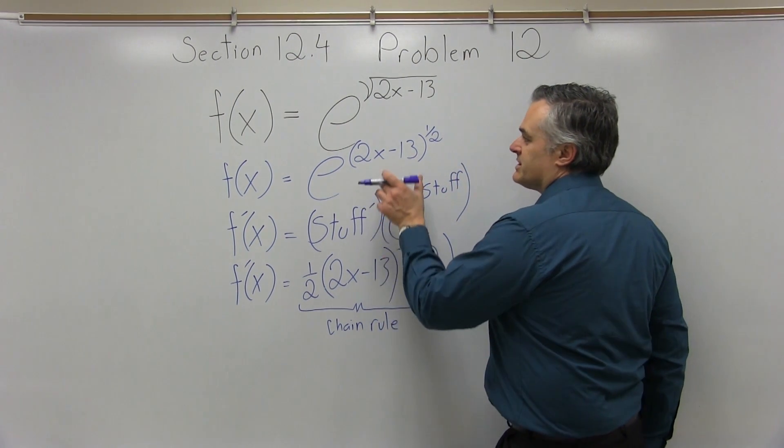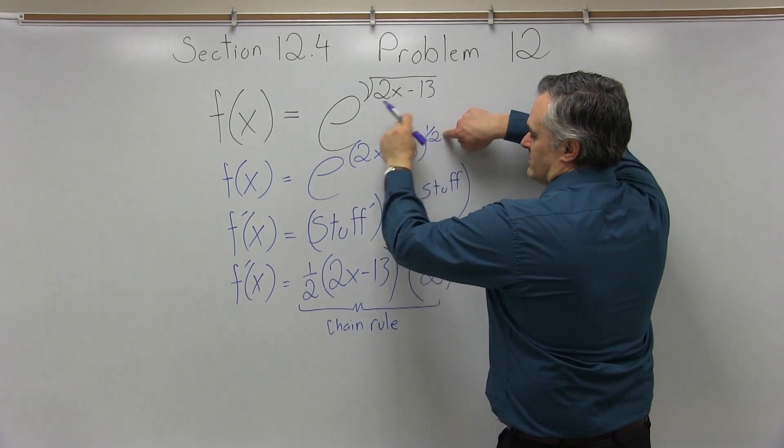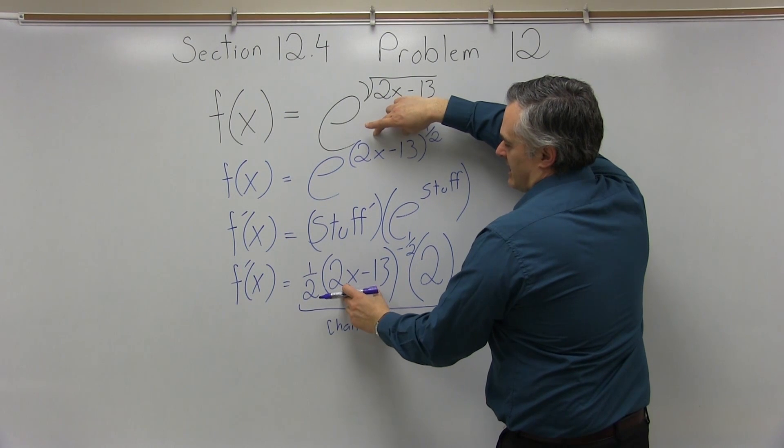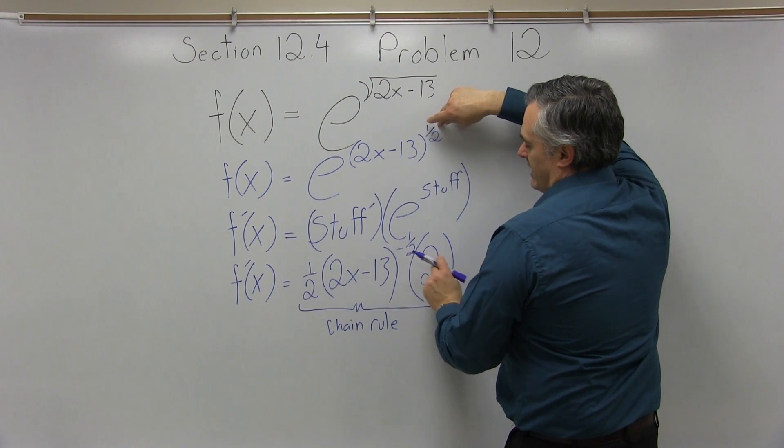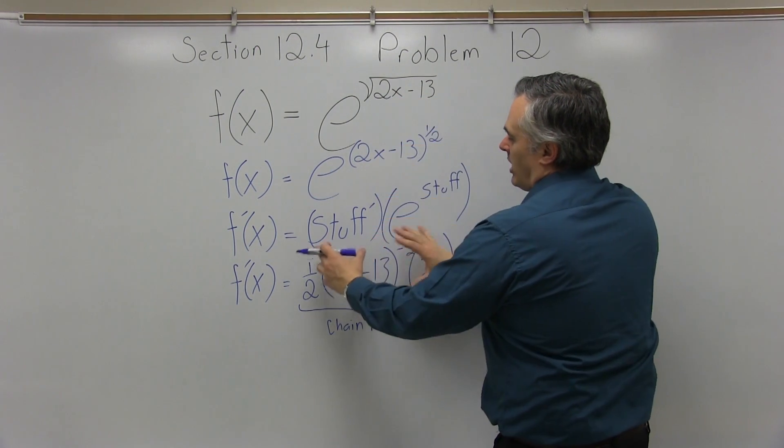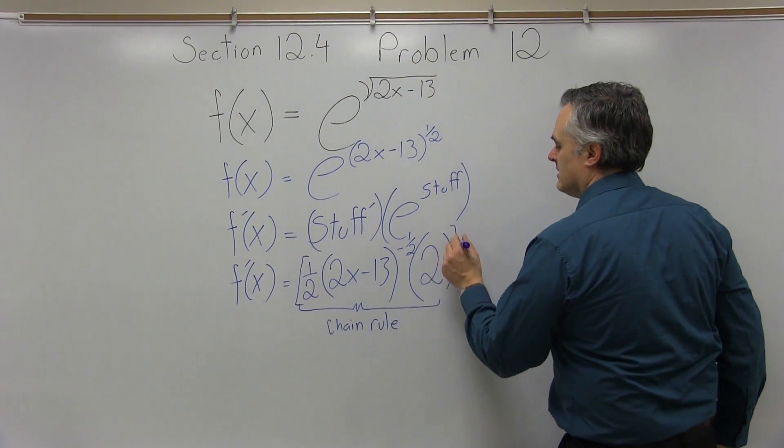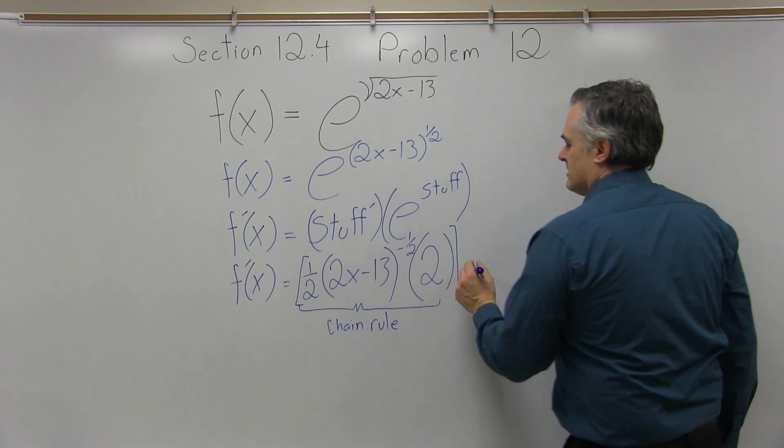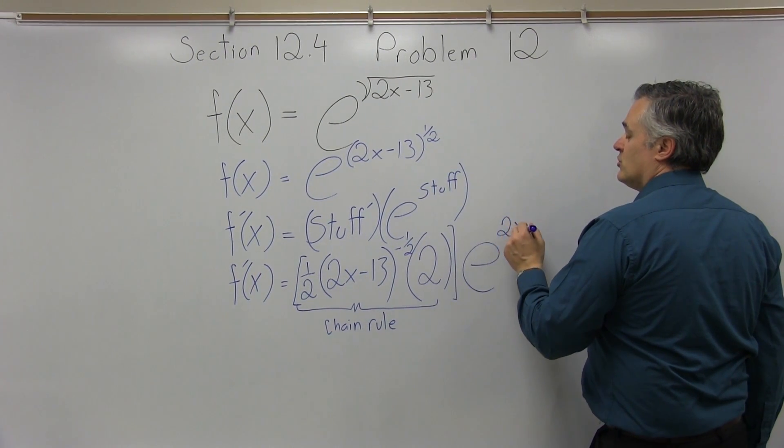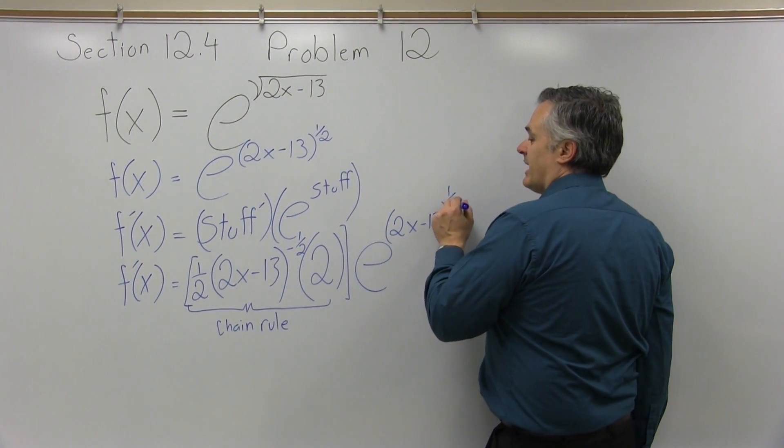So everything I have here came from the chain rule. The chain rule says to take the derivative of some stuff in parentheses to a power. The exponent comes down in front of the parentheses. I leave what's in the parentheses the same. I reduce the exponent by 1, and then I multiply times the derivative of what was in the parentheses. So all of that is just for the stuff prime part of my formula. So I can put that in some brackets, and then times e to the stuff. So the e to the stuff is 2x minus 13 in parentheses to the 1 half.